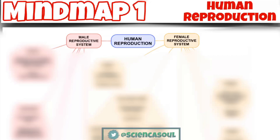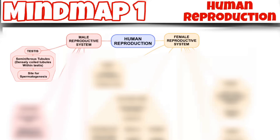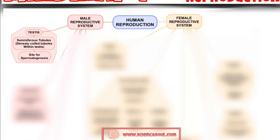The first part of the male reproductive system is the testis. Seminiferous tubules are densely coiled tubules within the testis, which are the site for spermatogenesis or production of sperms. The testis or testicle is the male reproductive gland or gonad, and it is homologous to the female ovary — remember this.